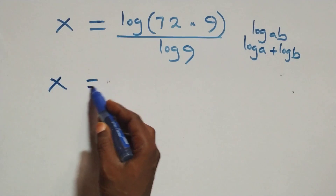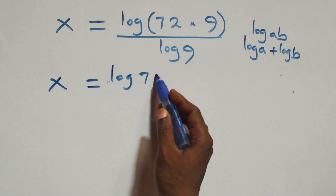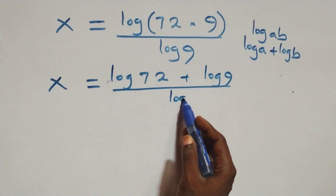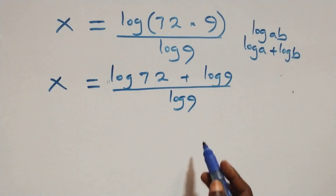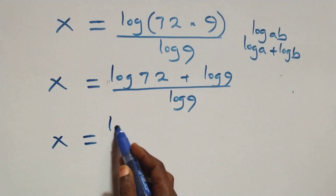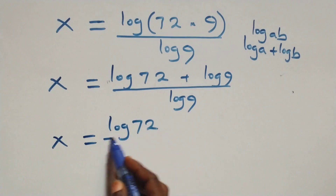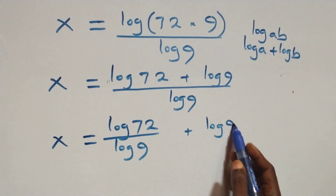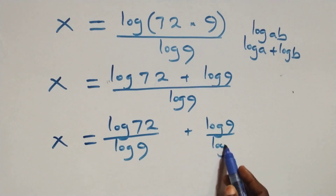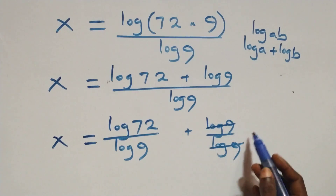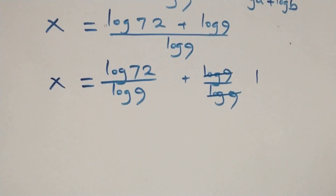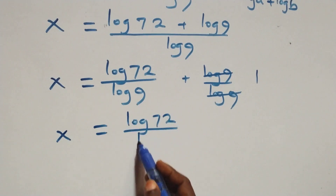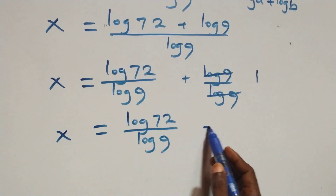So x equals log 72 plus log 9, all over log 9. We separate this into two fractions: x equals log 72 over log 9 plus log 9 over log 9. Here log 9 cancels each other, so we have x equals log 72 over log 9 plus 1.